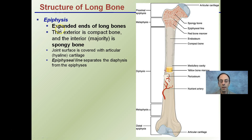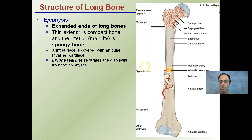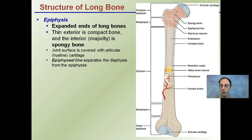The epiphysis expands the ends of the long bone — referring to basically the head regions. Its exterior is composed of compact bone, and the interior, which is the majority, is spongy bone, as you see here. The reason why it's spongy bone is that it's covered with hyaline cartilage. This line here is where the different regions meet — something called the epiphysis line — essentially the separation between the two. The key part is that yellow bone marrow is typically found in the diaphysis region. The reason why there's mostly spongy bone in the epiphysis is simply because this is what allows for red bone marrow to be housed and protected.